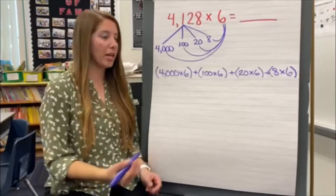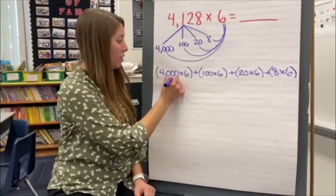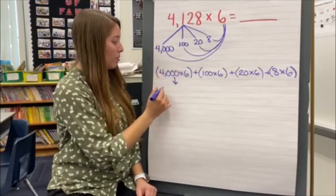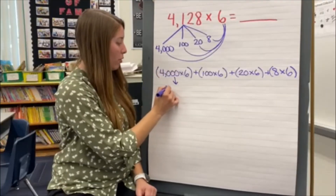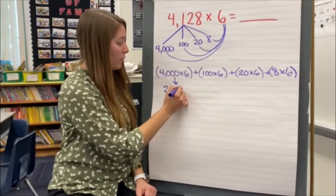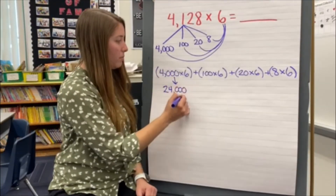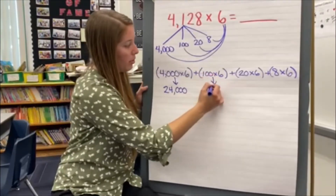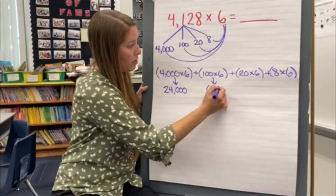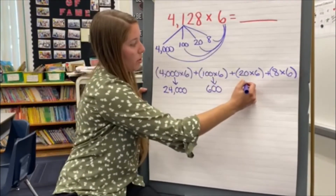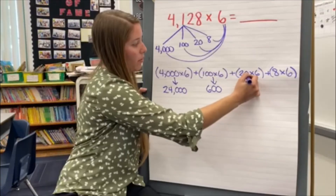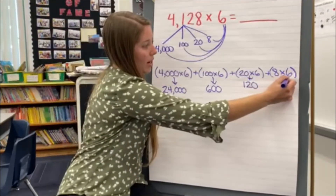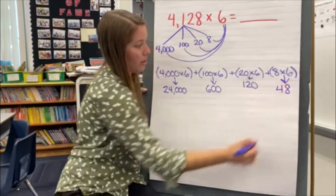Now I multiply each part starting with my parentheses. 6 times 4 is 24 with three zeros — 24,000. 6 times 1 is 6 plus two zeros — 600. 6 times 2 is 12 plus one zero — 120. And 8 times 6 is 48.